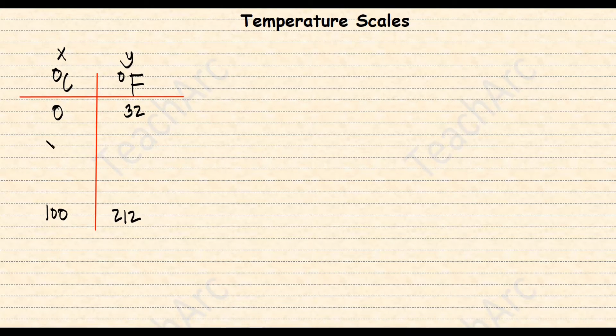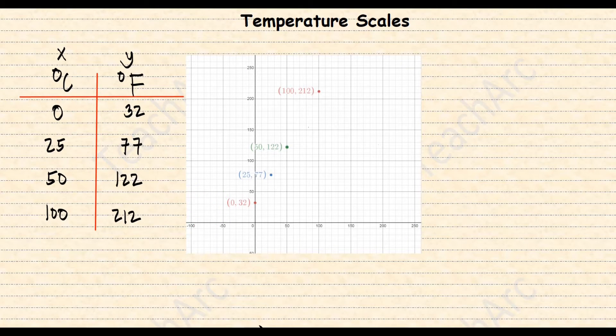25 degrees Celsius is 77 degrees Fahrenheit. 50 degrees Celsius is 122 degrees Fahrenheit. Plotting these values and look what we've got. We have a linear graph.